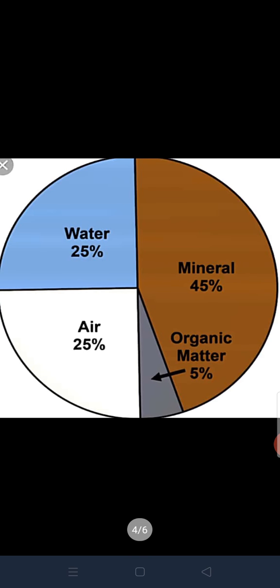Now, what are the constituents of soil? It consists of 25% water, 25% air, 45% minerals and 5% organic matter.